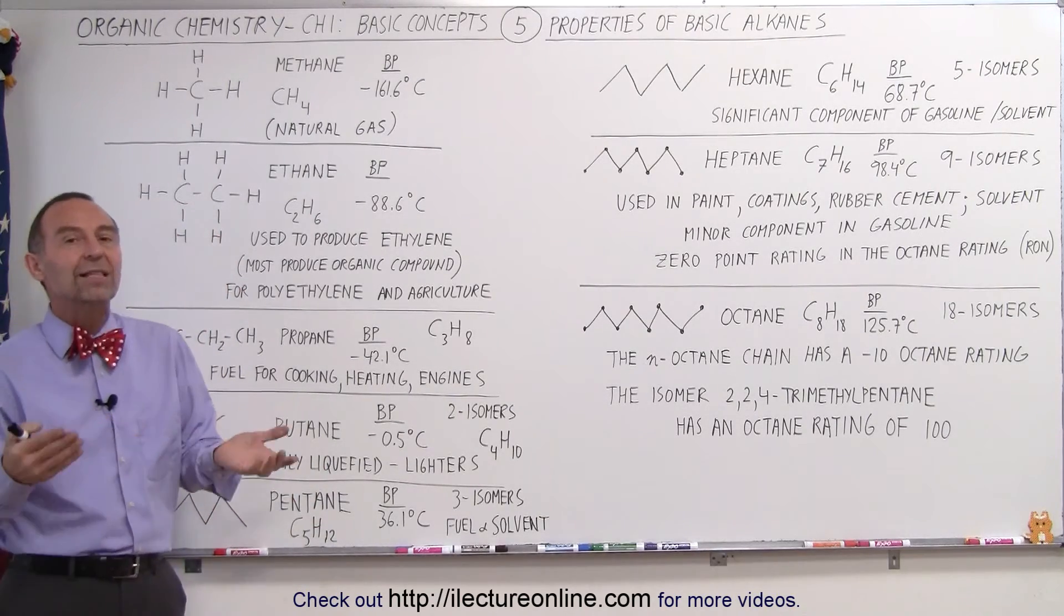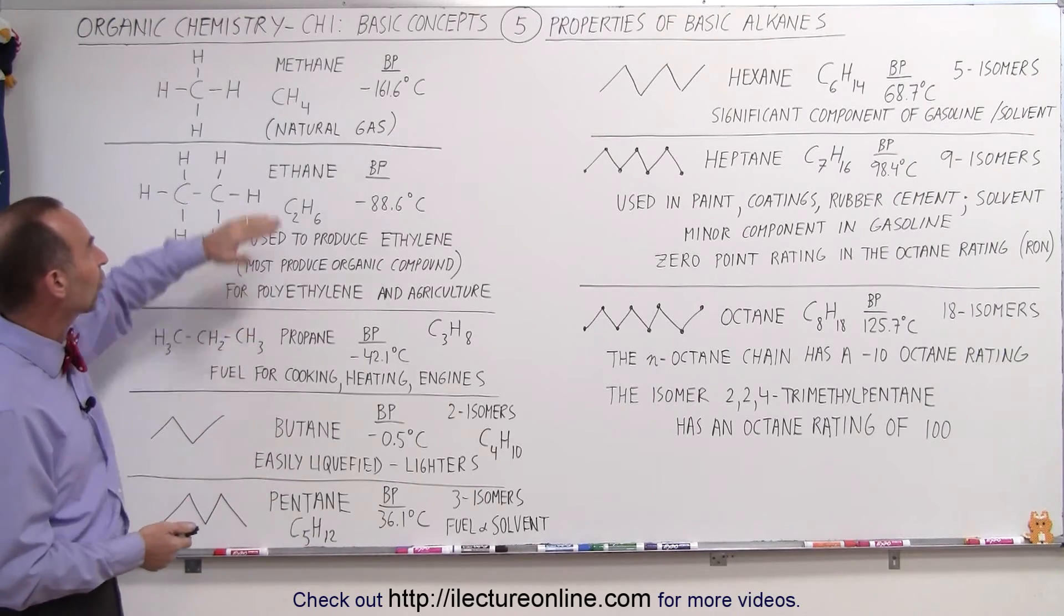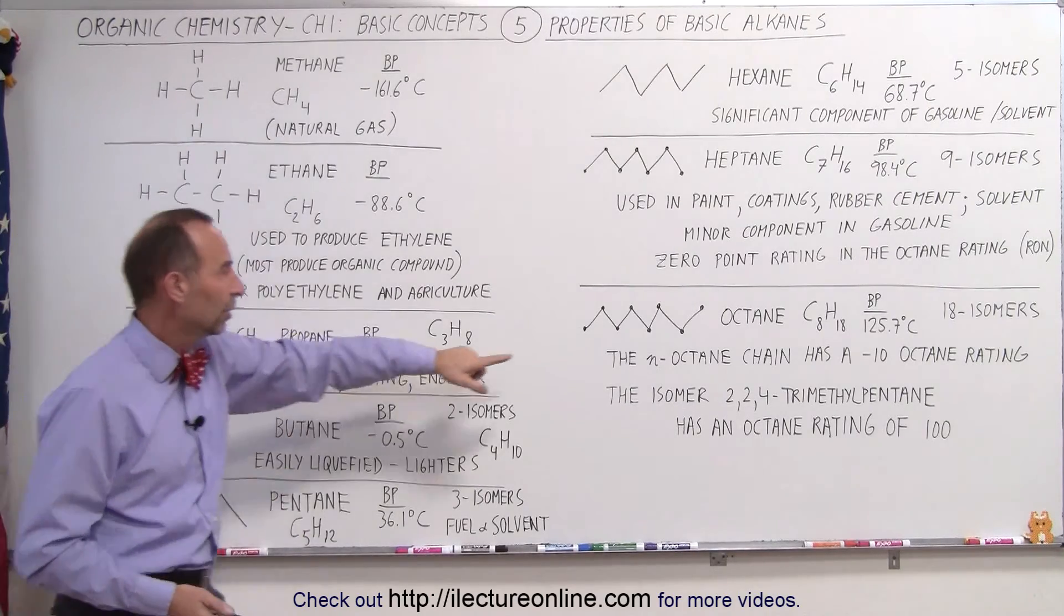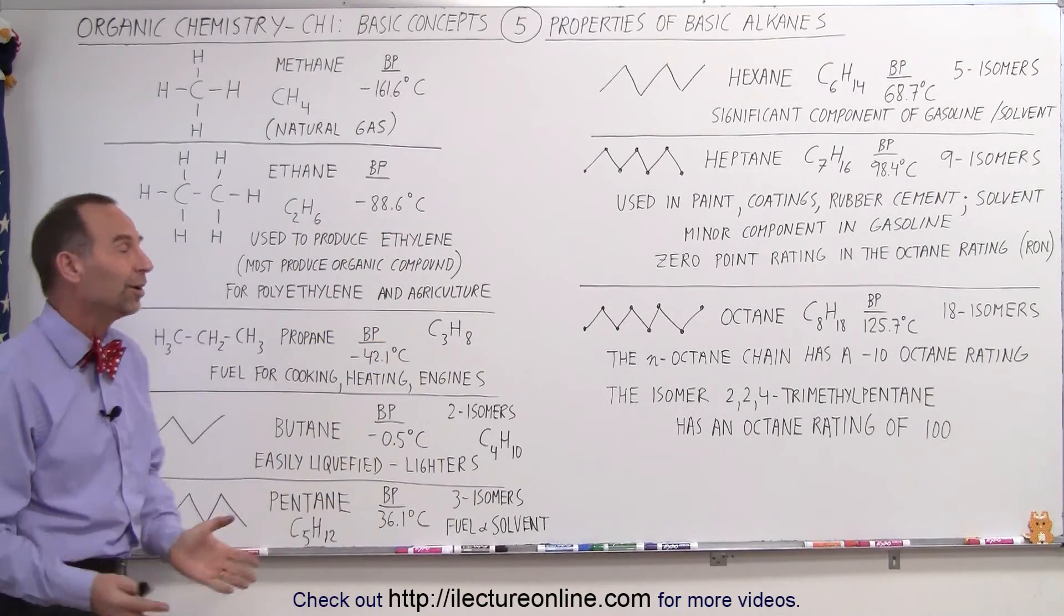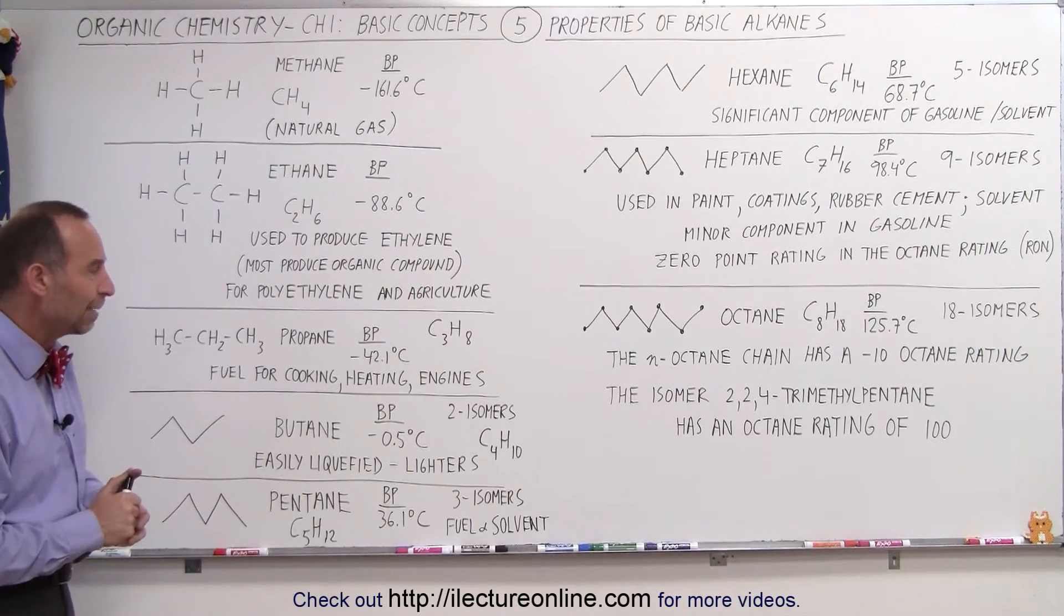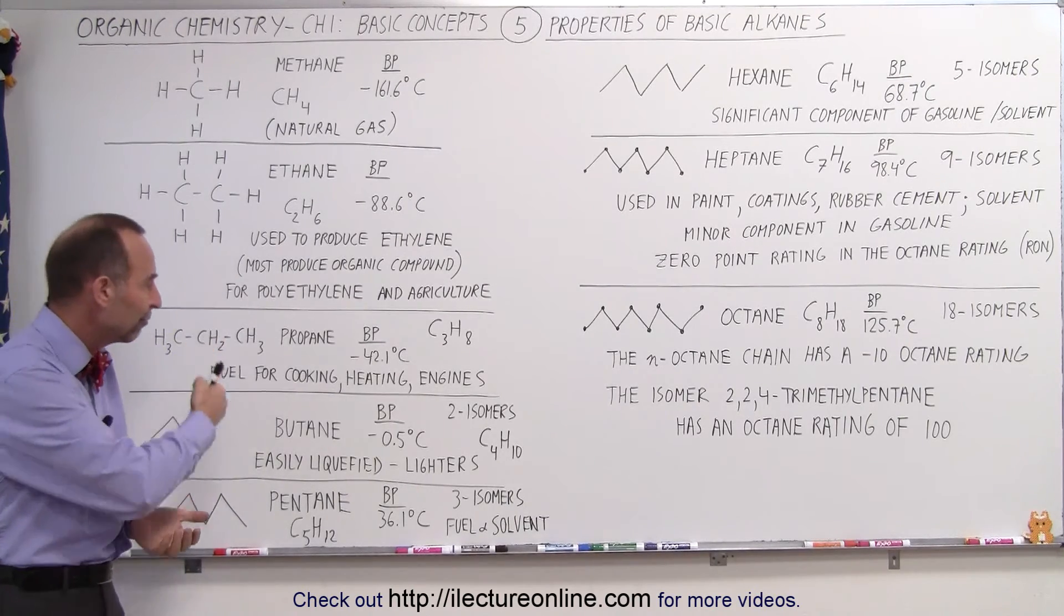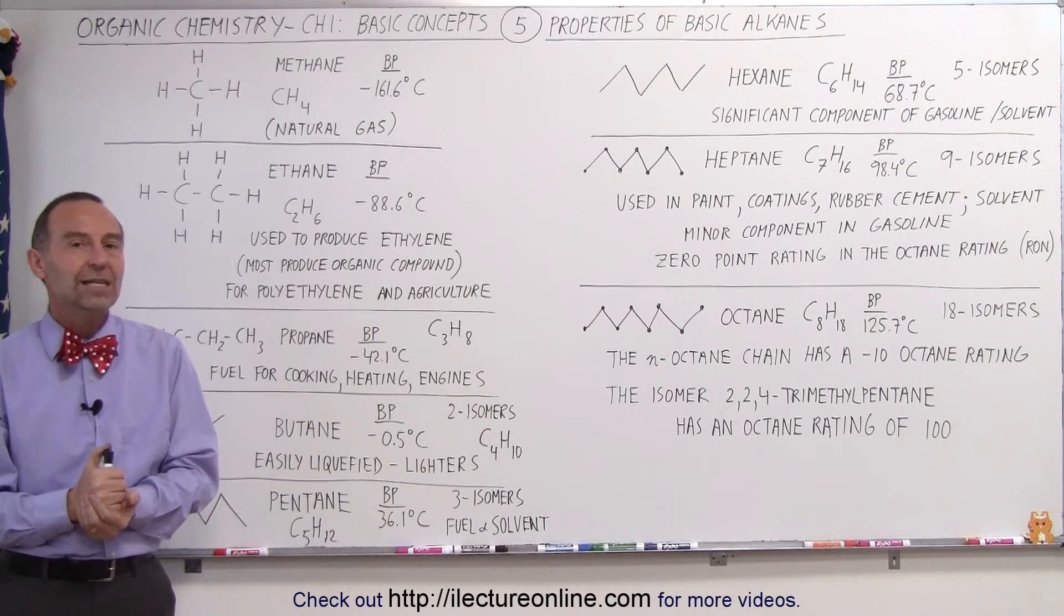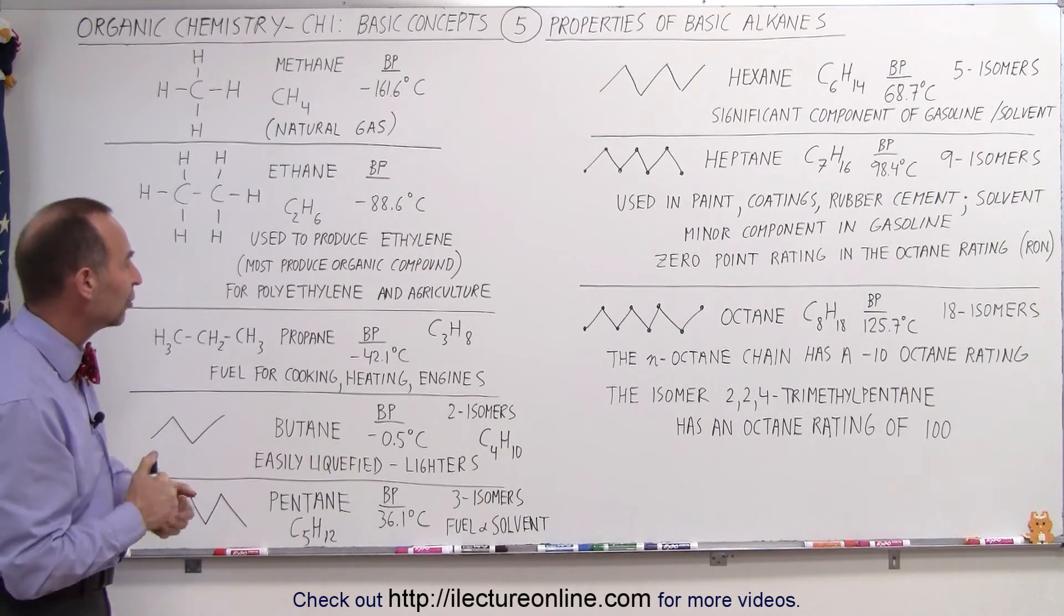So here you have some basic ideas of the basic alkane molecules starting from methane with one carbon and ending with octane that has eight carbons. There's of course many more but we'll have to attack those one at a time. So hopefully that gives you a better feel of what the alkanes are and what the various properties are of the first eight molecules in the alkane group.